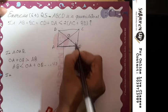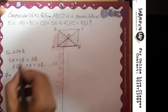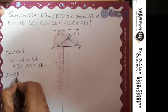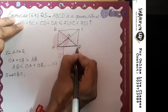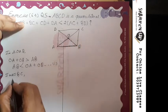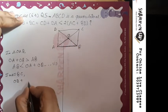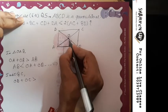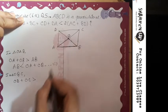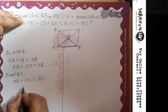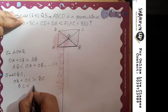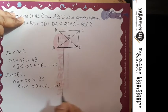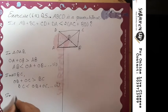Now take our second triangle OBC. In triangle OBC, applying triangle inequality: OB plus OC is greater than BC. So BC is less than OB plus OC. Let's name this our second expression.